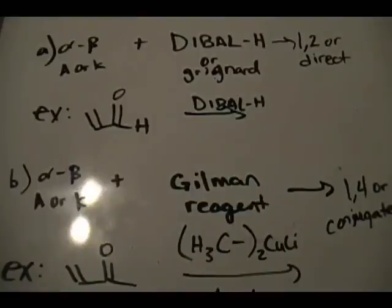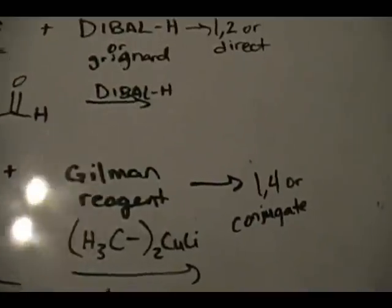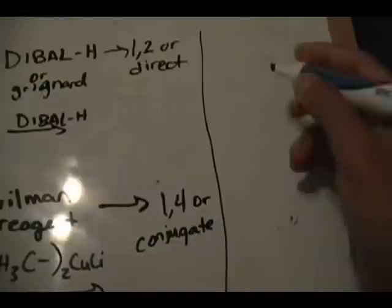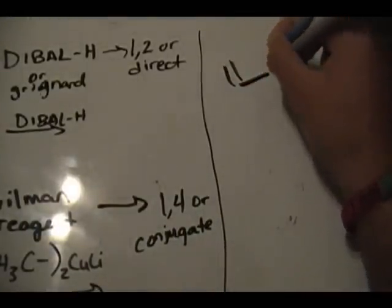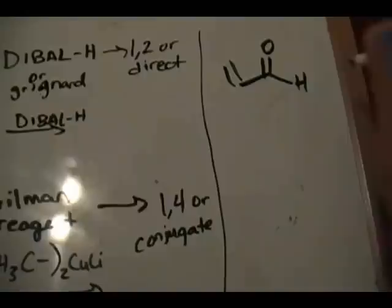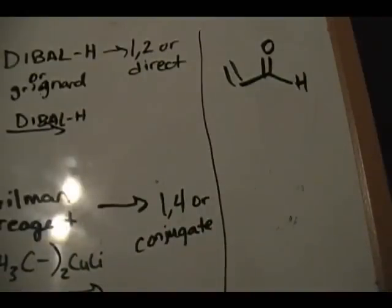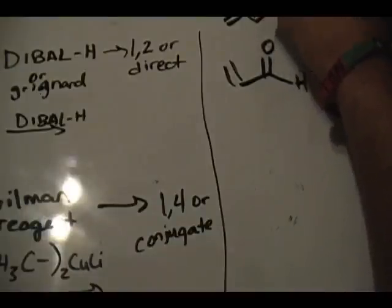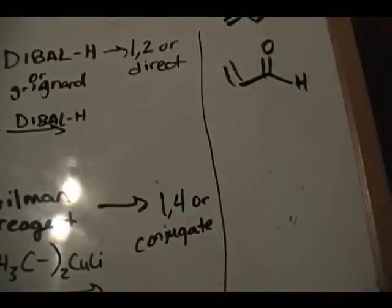For this video, again — alpha-beta unsaturated aldehydes and ketones. Before we get into the reactions, we need to understand what an alpha-beta unsaturated ketone looks like. I'll draw a structure over here. It's a conjugated system. Typical conjugated systems look like this: double bond, single bond, double bond.